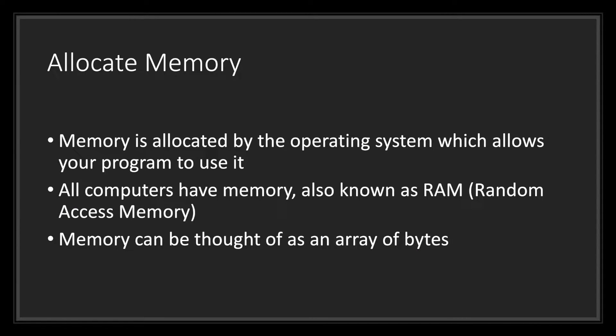The first step is allocating memory. Memory is allocated by the operating system, which allows your program to use it. All computers have memory, also known as RAM — random access memory. Memory can be thought of as an array of bytes.